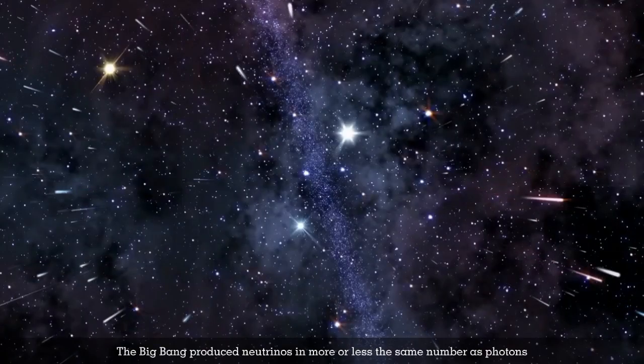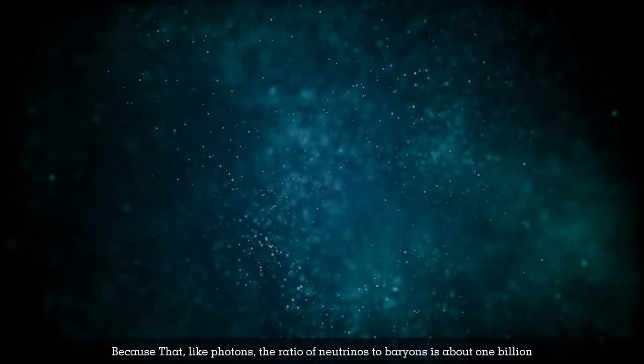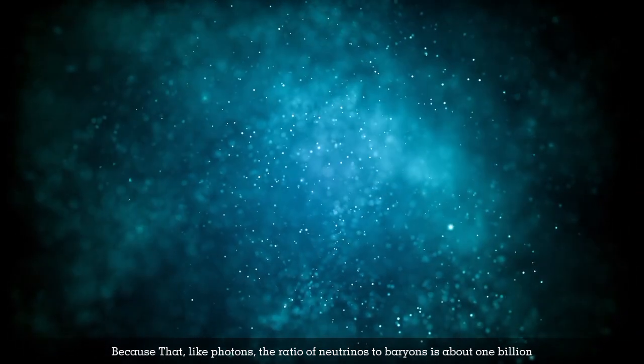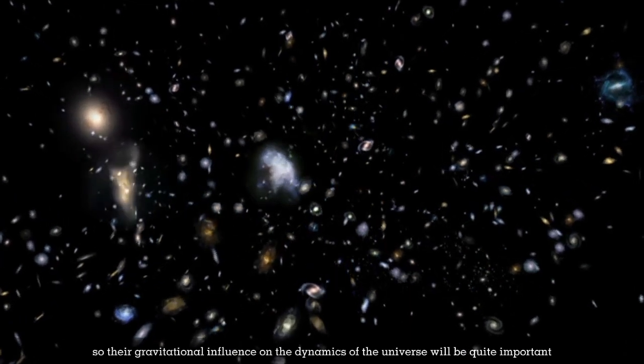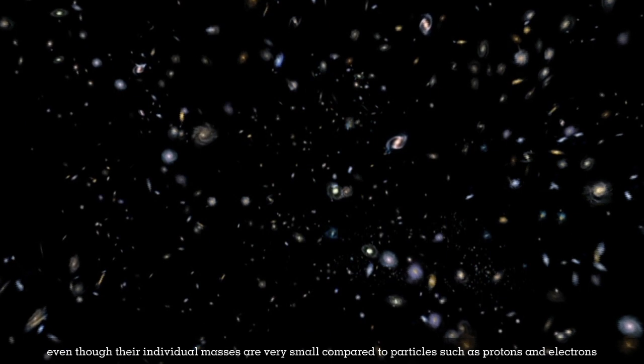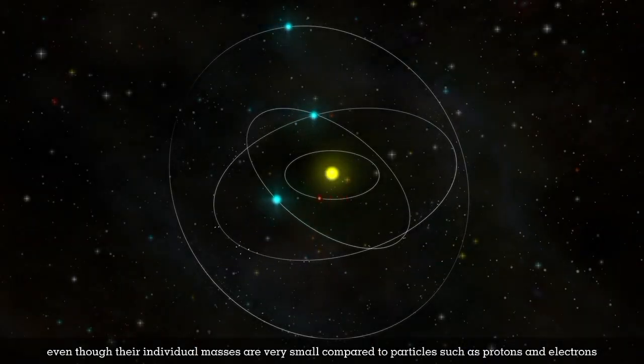The Big Bang also produced neutrinos in roughly the same number as photons. Like photons, the ratio of neutrinos to baryons is about one billion, so their gravitational influence on the universe's dynamics will be quite important, even though their individual masses are very small compared to protons and electrons.